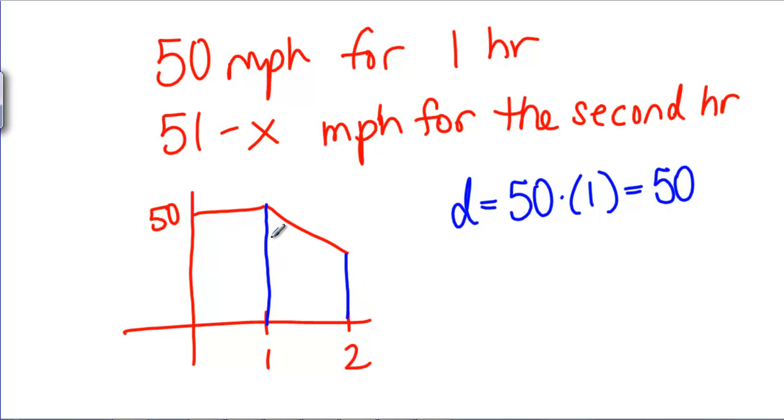You might say something like, well, find the average speed that you went over that time, or pick a point in that interval and say, well let's just pretend we were going that speed the whole time. Maybe we look at the point 1.5 hours into our drive. Then we would say that our distance is the velocity 1.5 in, which is 51 minus 1.5, times this length of time, which is 1.